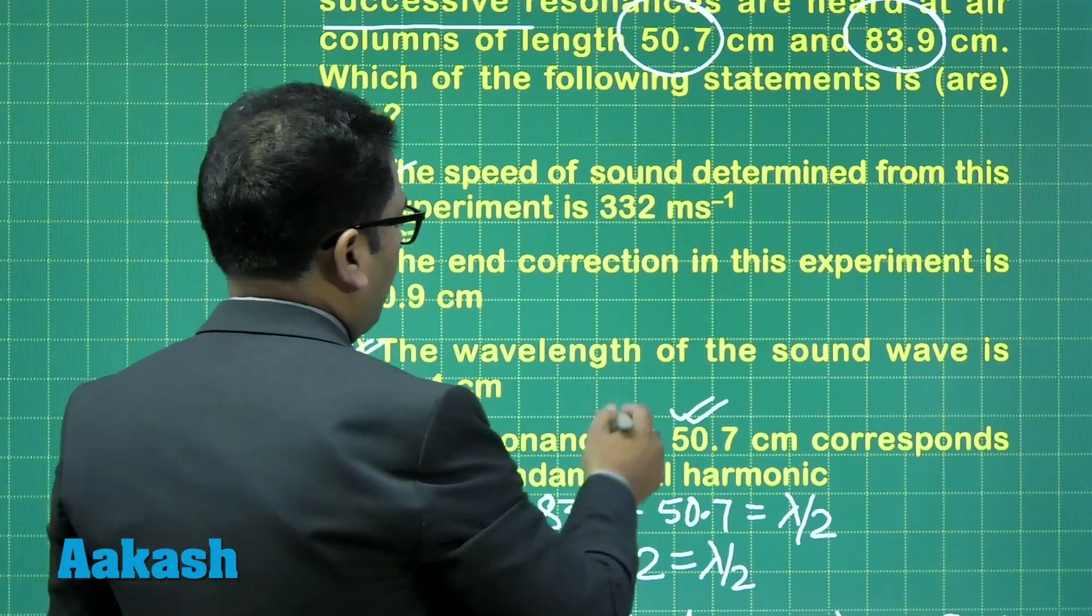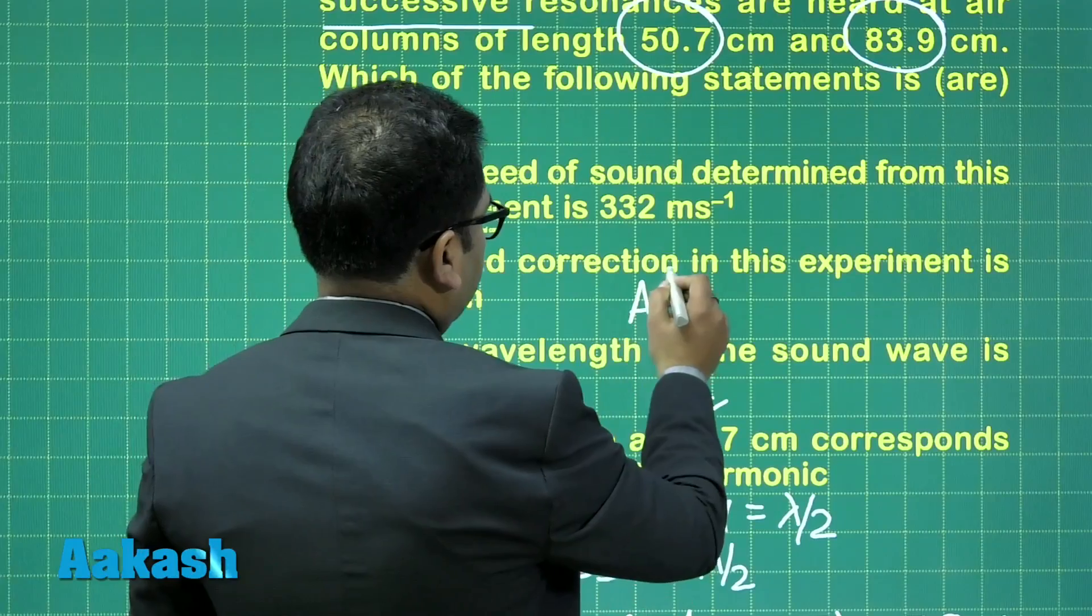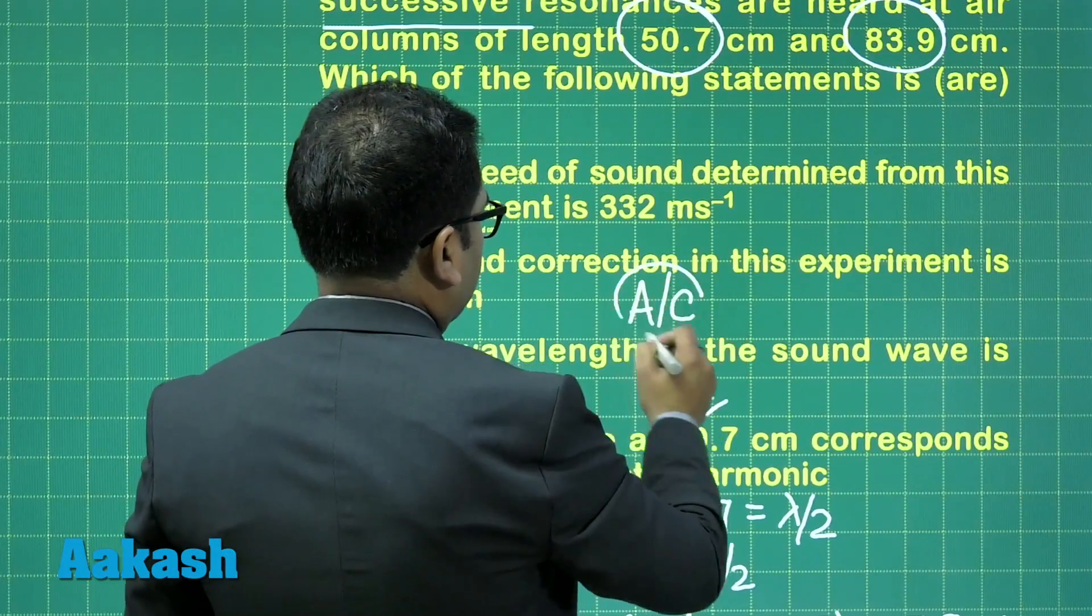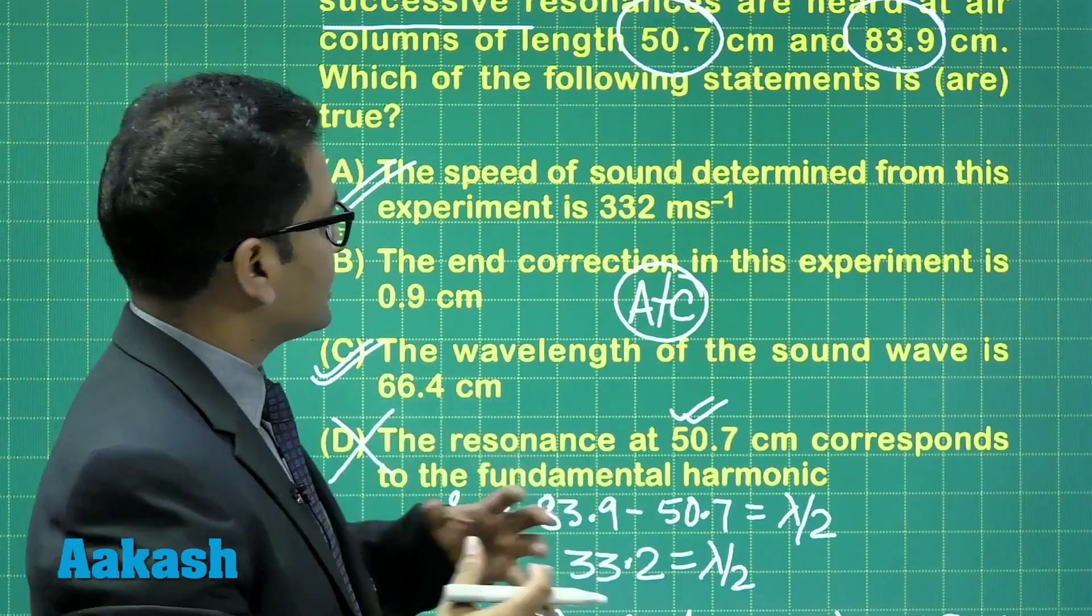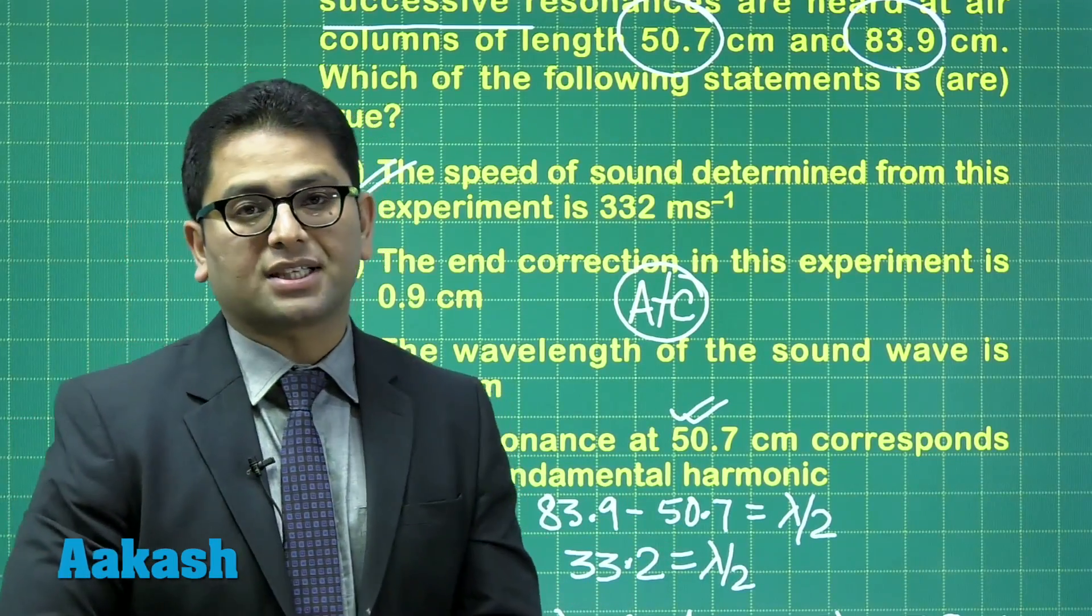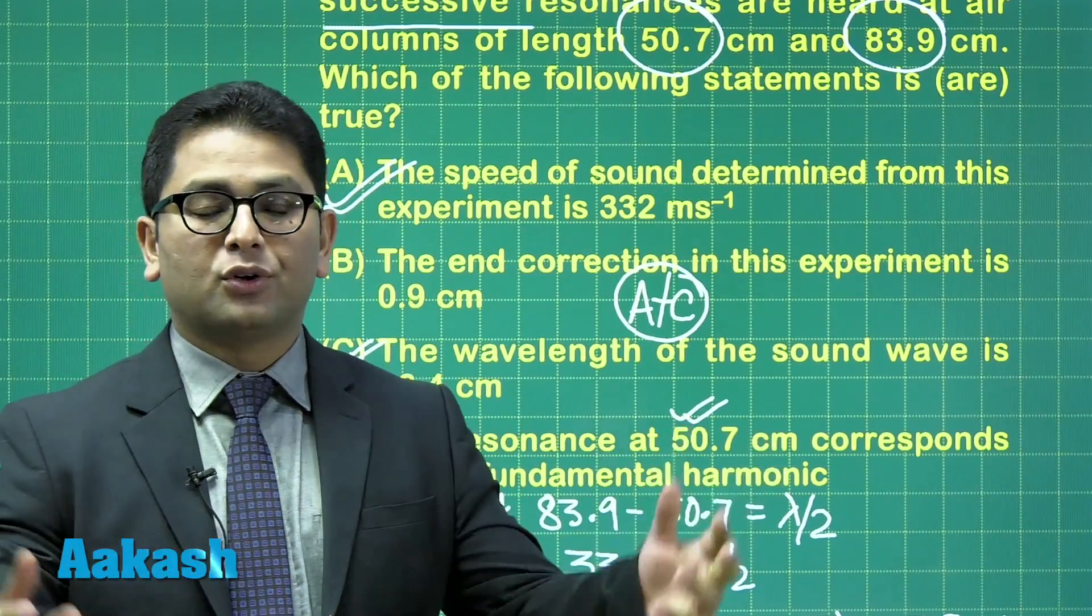Therefore, for question number 6, option number A and option number C would be the correct option. A plus C, rather, that would be the case. So, A and C are the correct option for question number 6. Let's move to the next question.